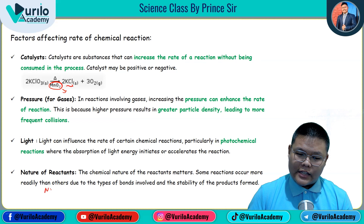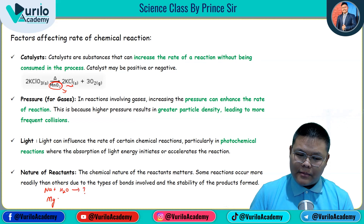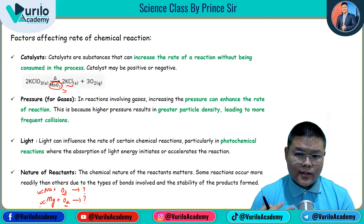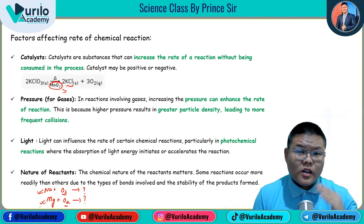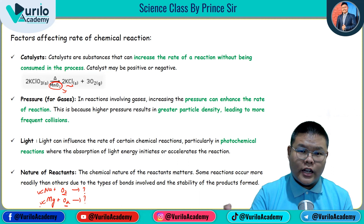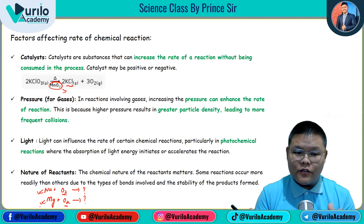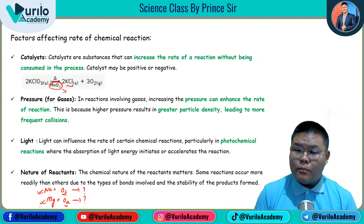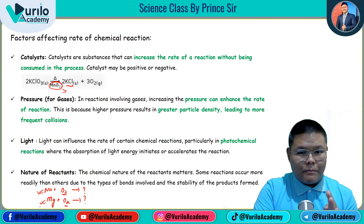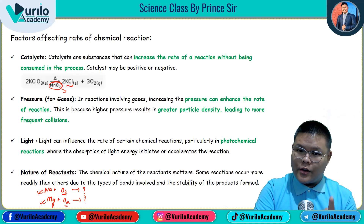Sixth factor: nature of reactants. For example, sodium versus magnesium reacting with oxygen — the rate of product formation depends on the nature of the reactant: how stable it is, how readily it loses or gains electrons, electropositive or electronegative character. So this chapter's theory is complete. In the next video, we will talk about how to balance chemical reactions. Stay tuned and stay happy. Thank you so much. Have a good day.